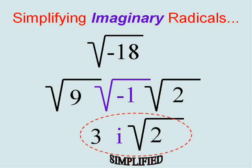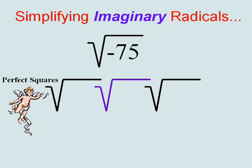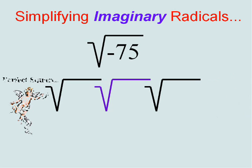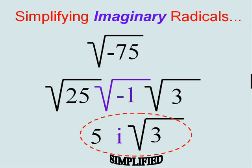Pretty much the same thing, except that you take out the negative 1, or the square root of negative 1, and you get i. We'll do one more. The perfect part, the imaginary part, and the garbage. The perfect part is 25, the imaginary part is always the same, and the leftover is 3. It's always three steps: 5i radical 3. It's pretty much the same thing, except we have that imaginary part that we have to take out because it's a negative square root.